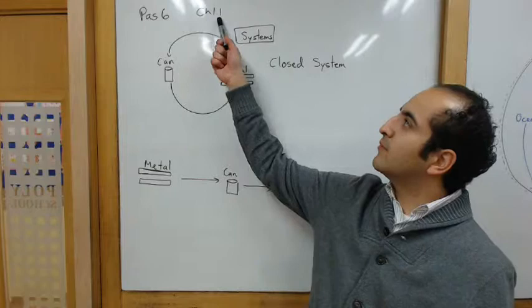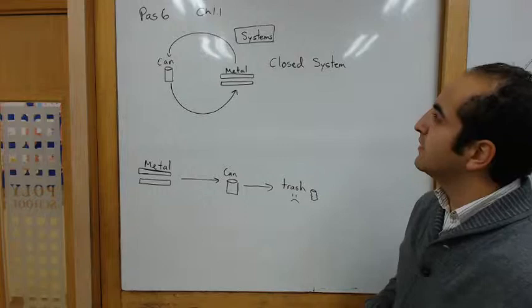Hello, this is Ms. Moreno, and this is for Path 6, Chapter 1.1. The chapter is called Technology is Used to Explore the Earth System.